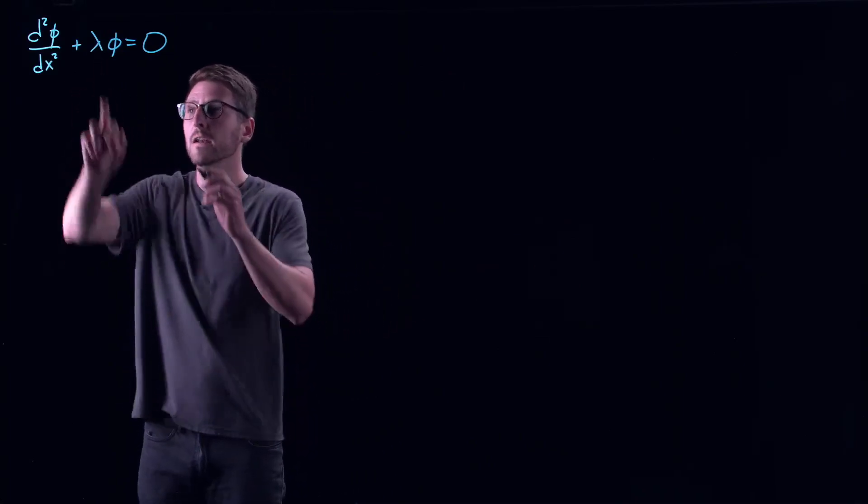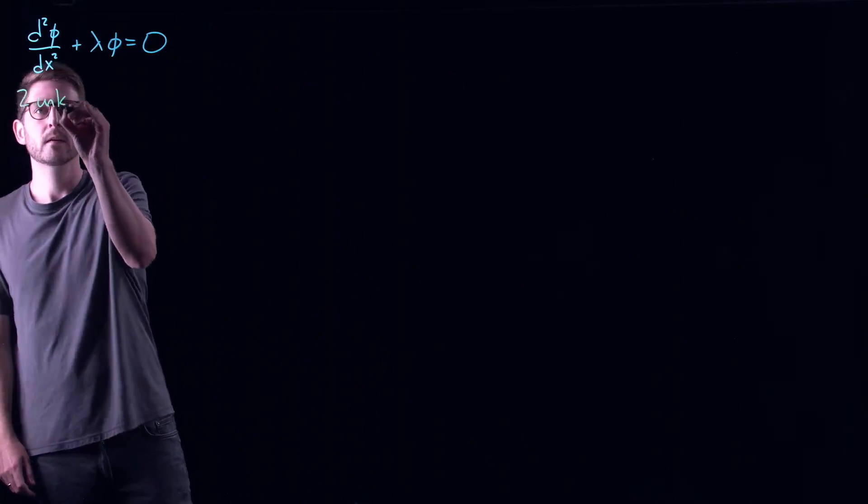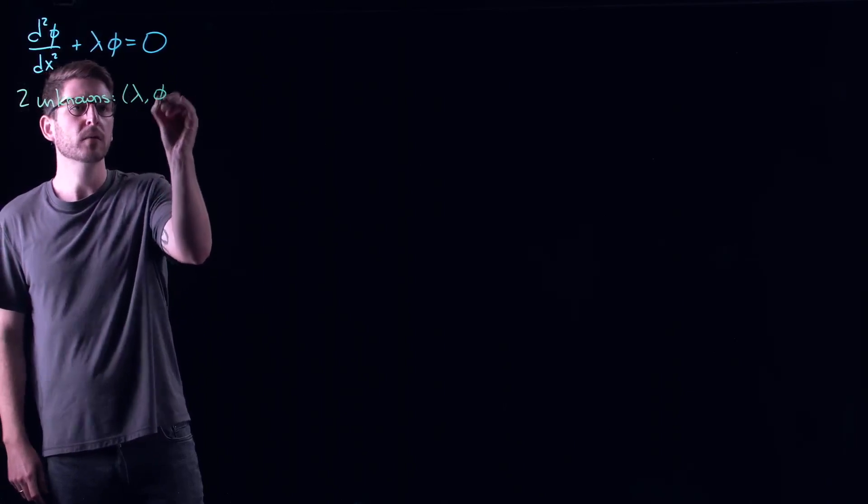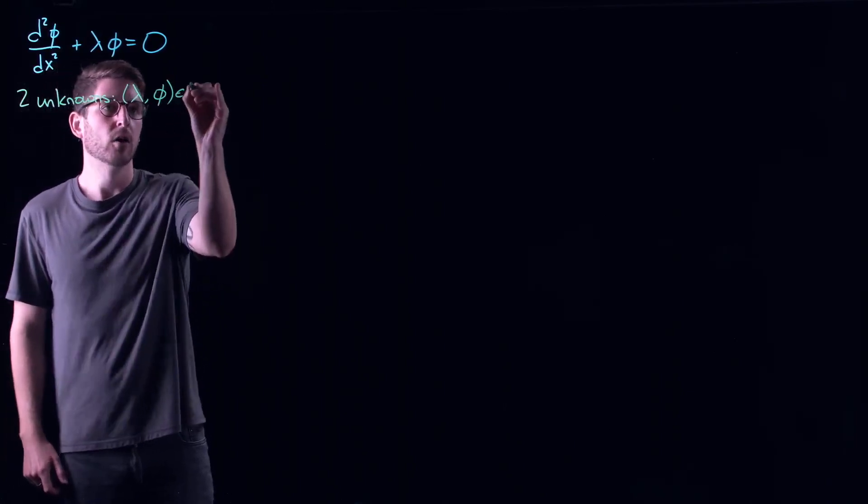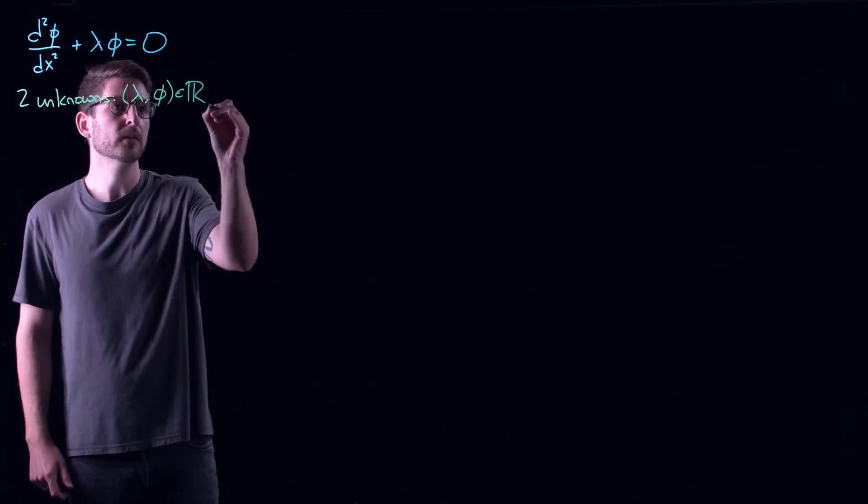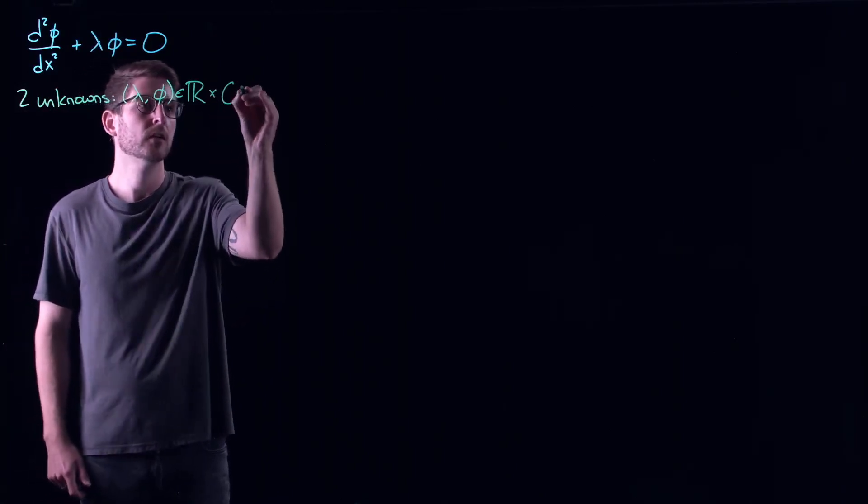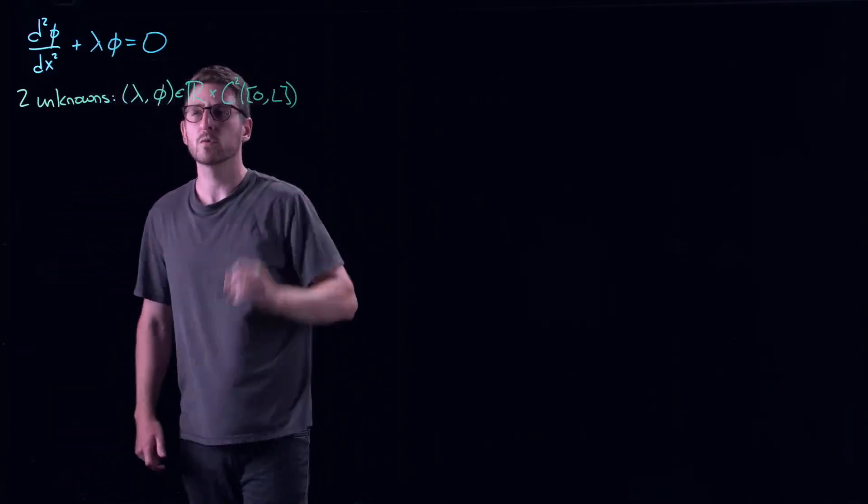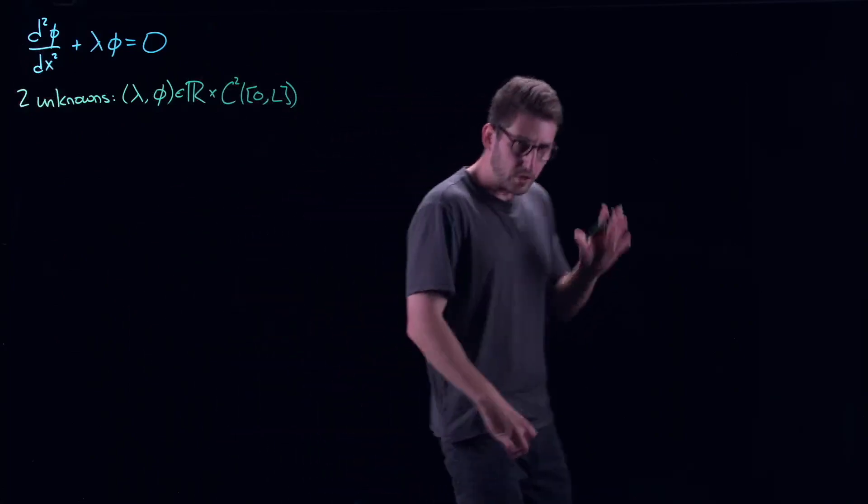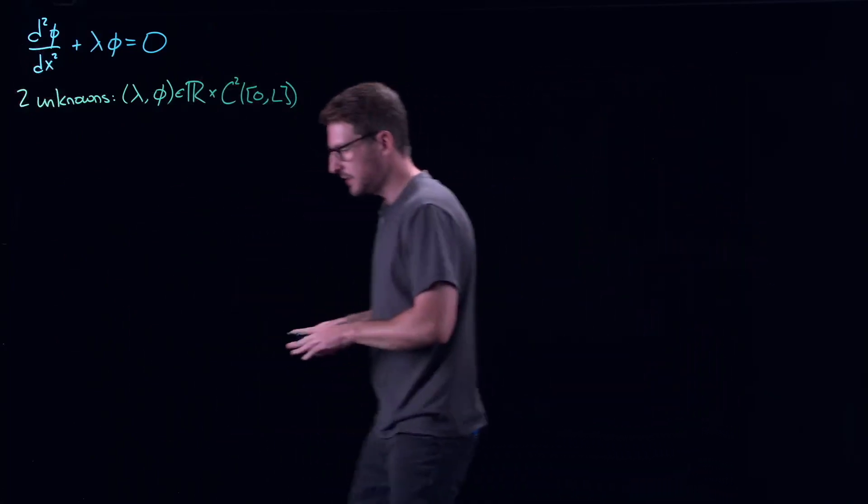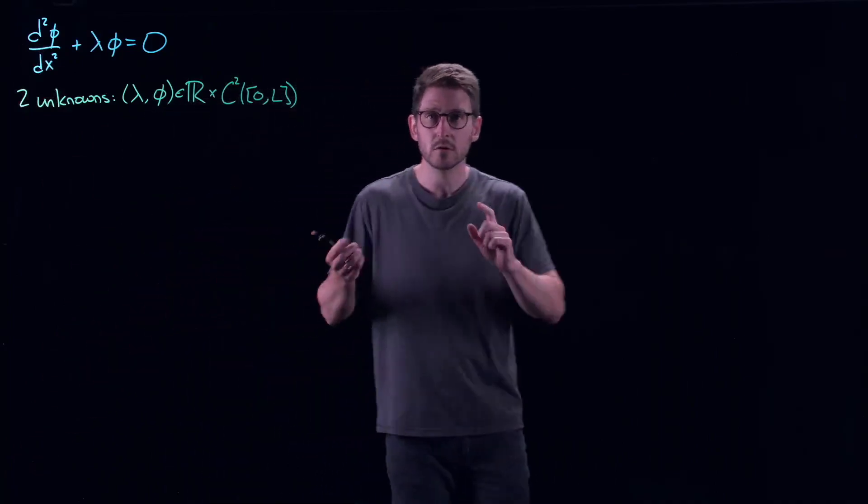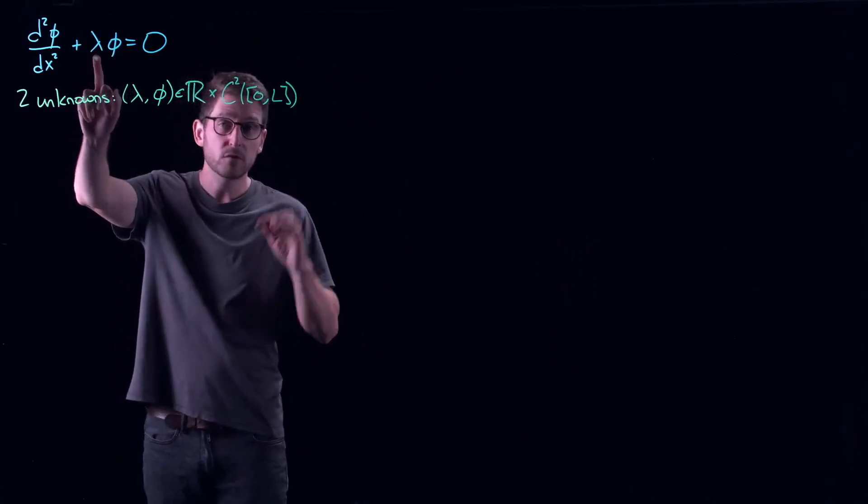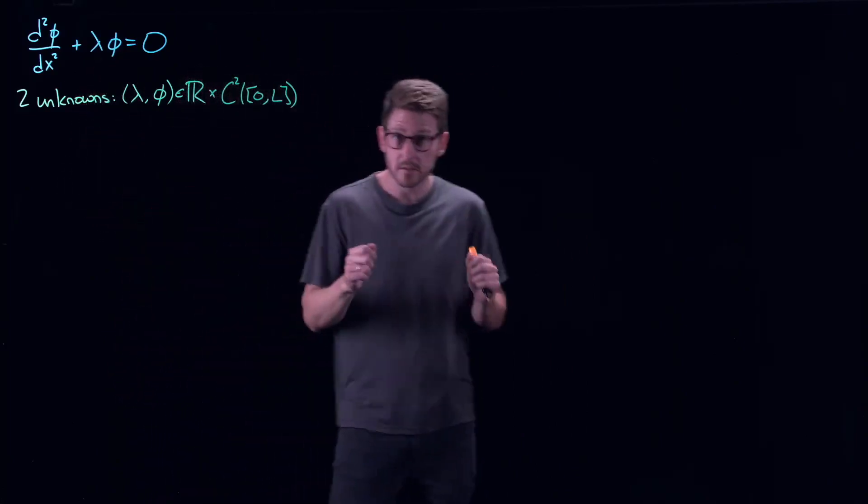The important aspect here is that we have two unknowns in one equation. We need to find lambda and we need to find a function phi. Lambda would be a real number and phi would be a continuous function on the interval zero to L. Technically it should be at least twice differentiable because we need two derivatives here, but we're not going to bog ourselves down with the spaces these things belong to. I just want you to notice that this is a two-part problem. Things become intertwined together. And we've already seen that lambda is very critical for a number of different pieces in the separation of variables.